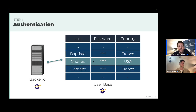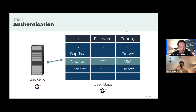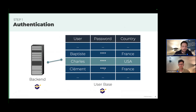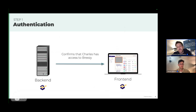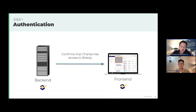The back end searches the user base to find Charles and verify his password. Generally every software stores additional information about users — to keep it simple, I'll just mention a 'country' property: Charles lives in the US. The back end then confirms Charles is a valid user and he can access Breezy, so the front end lets Charles enter the interface.